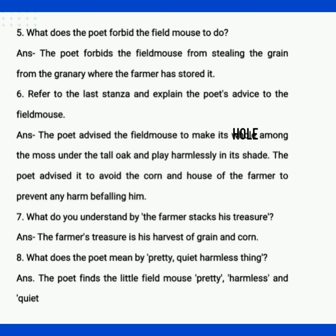Our fifth question is: what does the poet forbid the field mouse to do? The poet forbids the field mouse from stealing the grain from the granary where the farmer has stored it. Yani ki poet forbid karta hai field mouse ko steal karne se — grain churaane se — jo ki farmer ka hai, aur farmer ne apni granary mein rakha hua hai.